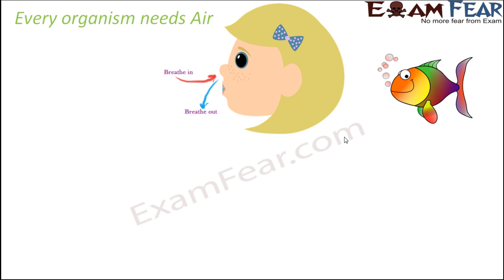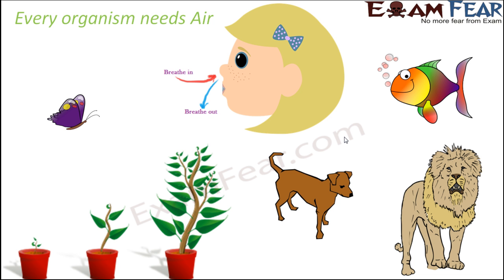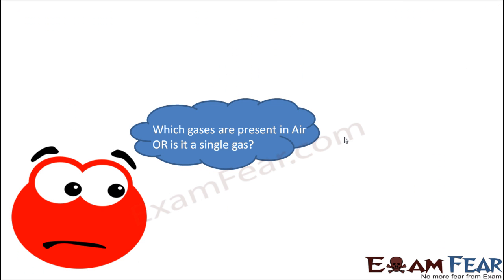We will learn how fishes get air, but they also need air for their survival. If you observe fishes inside an aquarium, you can actually see some bubbles inside the water, and these bubbles indicate the presence of air — air is present somewhere inside the water also. Think of animals like lions, tigers, dogs, cats, insects like butterflies, and even plants — all these organisms need air.